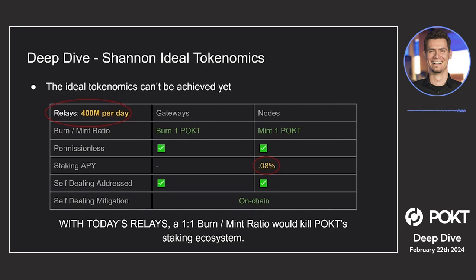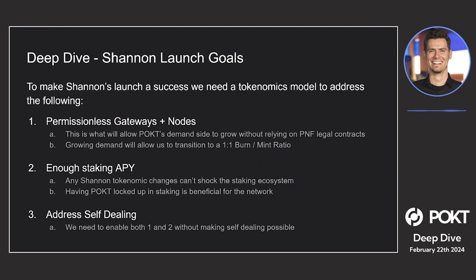We can't do that. Even though we'd love to have this model, it can't be applied today because we're just not mature enough as an ecosystem to flip the switch. So since we know the ideal Shannon tokenomics are possible, what should our goals be right now going into Shannon? Number one: permissionless gateways and nodes. This will allow POKT's demand side to grow without relying on legal contracts — any gateway can just stake POKT and start using POKT for relays, allowing the network to get more relays and eventually transition to a one-to-one burn-to-mint ratio.